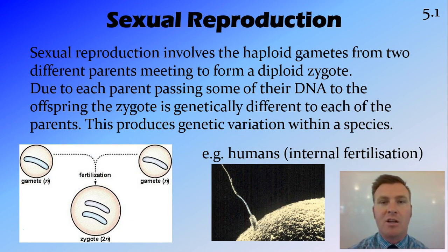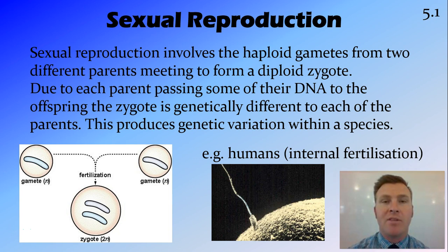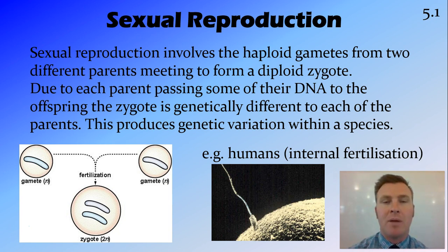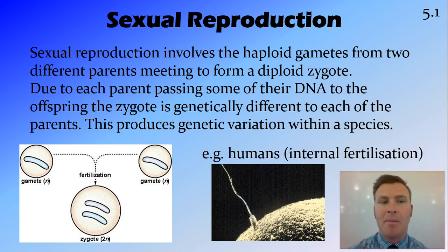Sexual reproduction involves two parents, and each of those parents produces a haploid gamete — remembering that a gamete is a sex cell, and haploid means they have half the number of chromosomes of a full organism. This process of meiosis produces these gametes, and when gametes from two different parents come together, they form a zygote.